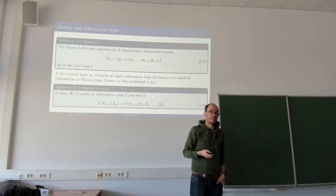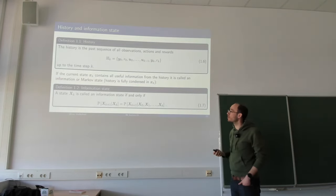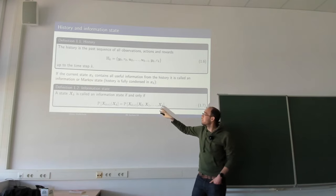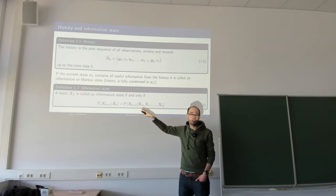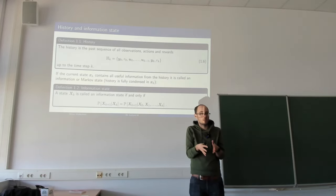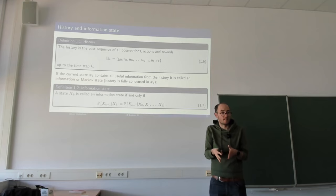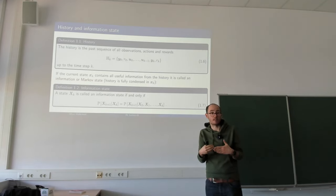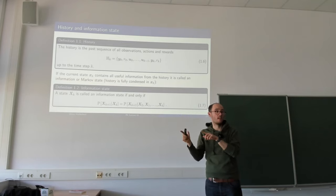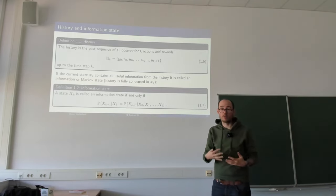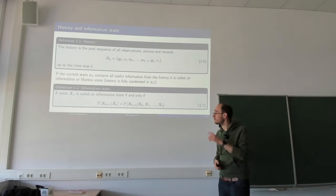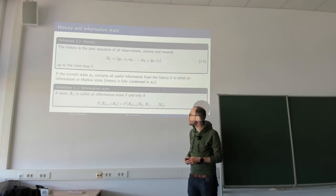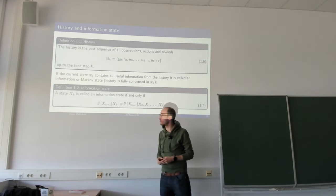This is a very important property because it tells us that if we have a decision-making problem where the state information can be considered an information or Markov state, I can make my current decision just based on the current state. I do not need to take into account the entire past, and I do not need to save it — I can throw away past data. This reduces the complexity of algorithms. Past information is not required because everything is condensed in the current state.